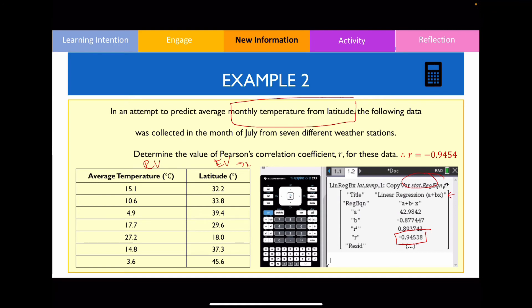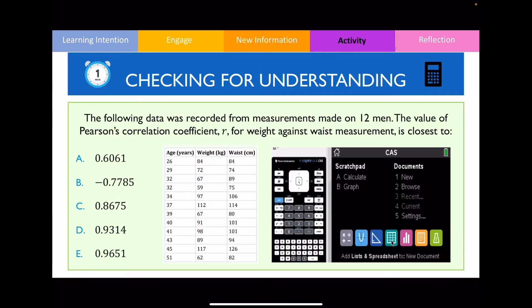Generally, the question should tell you how many decimal places your correlation coefficient should be. But if it doesn't, then just put three to four values and that should be acceptable. What I'd like you to do now is I want you to have a go answering this question yourself. Give yourself a minute and then we'll go through the answers together.